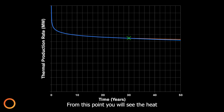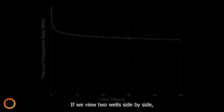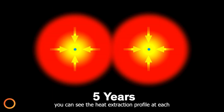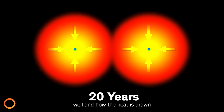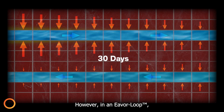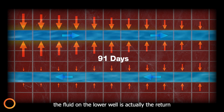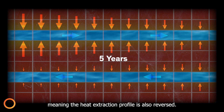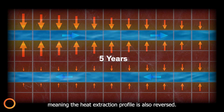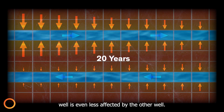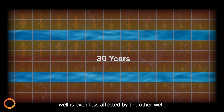From this point, you will see the heat production is only slightly less. If we view two wells side by side, you can see the heat extraction profile at each well and how the heat is drawn from the surrounding rock. However, in an Everloop, the fluid on the lower well is actually the return well of the system and therefore the flow direction is reversed, meaning the heat extraction profile is also reversed. This means the pull of heat from each well is even less affected by the other well.